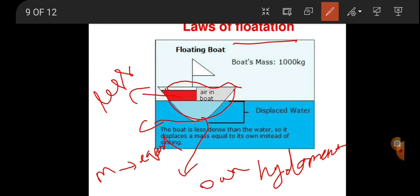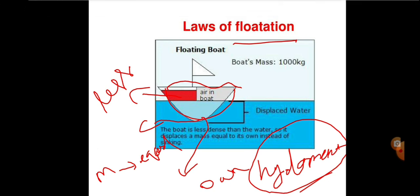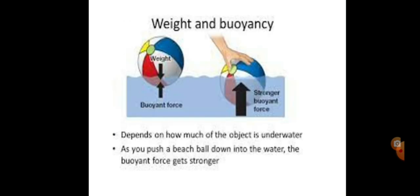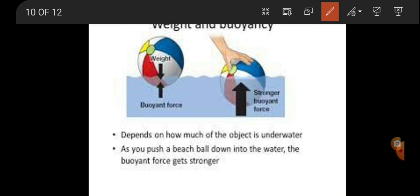Weight and buoyancy. First of all, difference in weight of the object underwater. As fish and objects fall down into the water, the buoyant force is stronger. Buoyant force means the upward force.